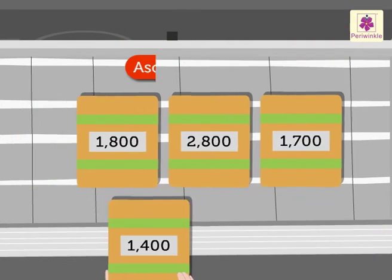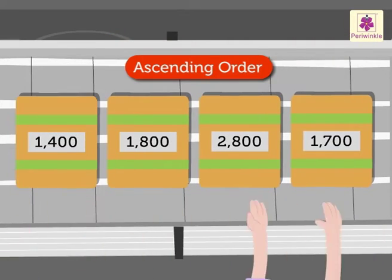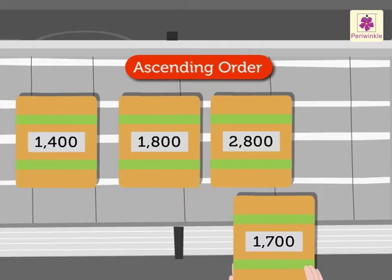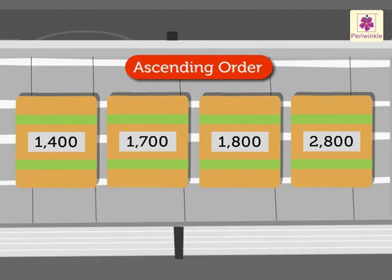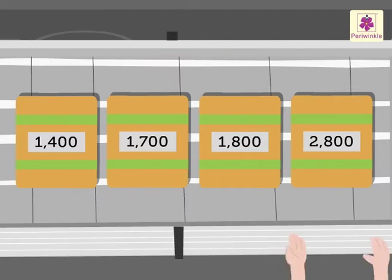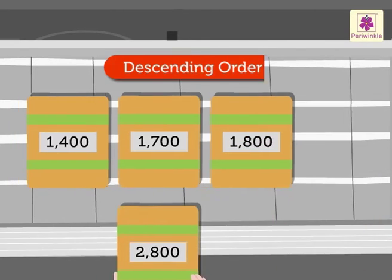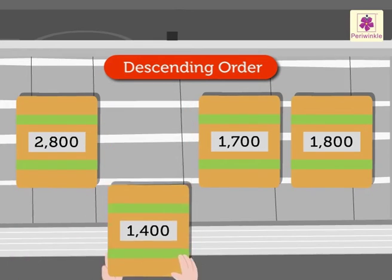So the ascending order is: one thousand four hundred, one thousand seven hundred, one thousand eight hundred, two thousand eight hundred. And the descending order is the reverse of that.